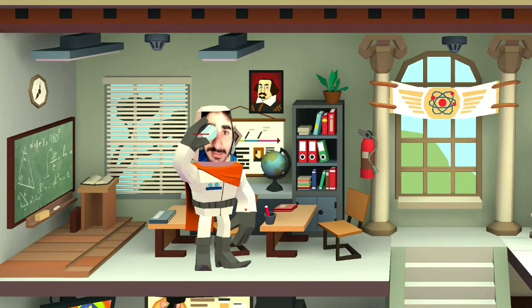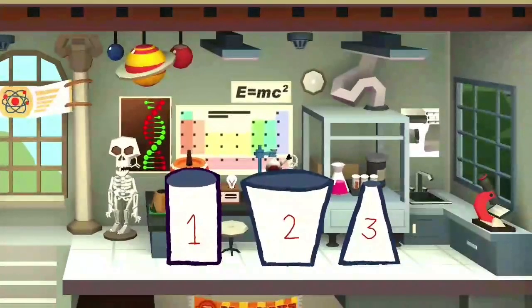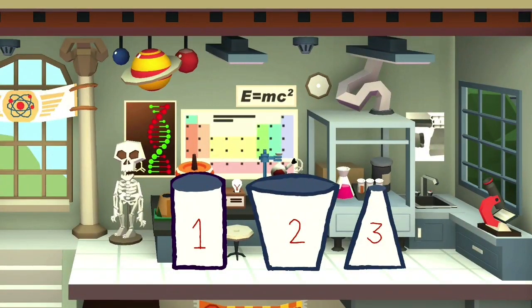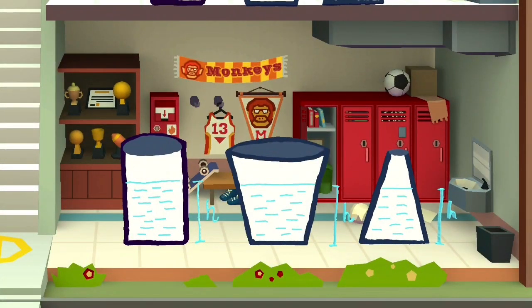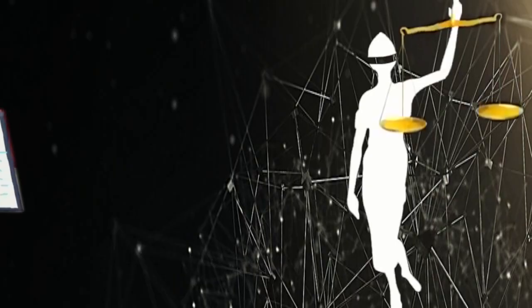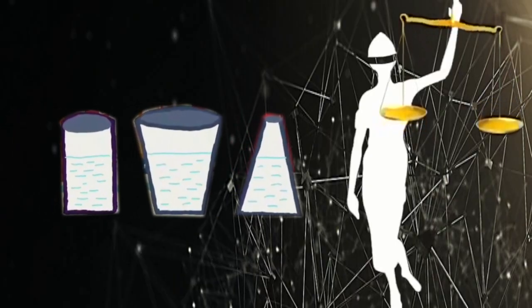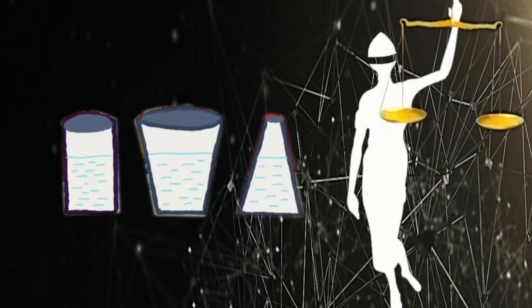I want you to imagine three flasks: flask 1, flask 2, and flask 3, and all the flasks have bases of the same dimensions. Now pour water in each flask up to the same height h. When we put each flask on a measuring scale, which flask do you think will show the highest reading?